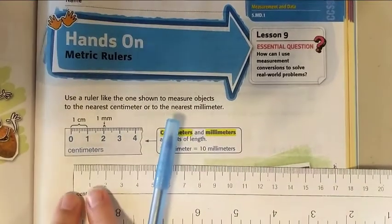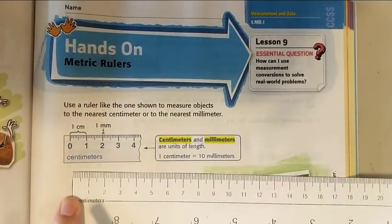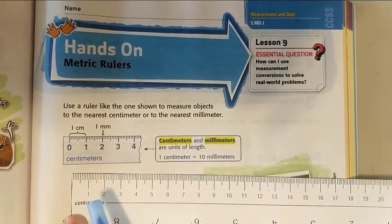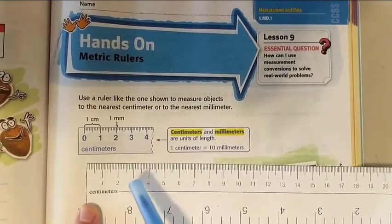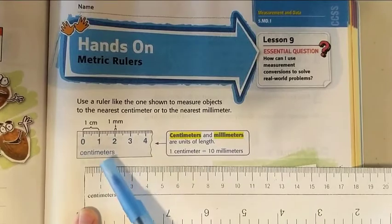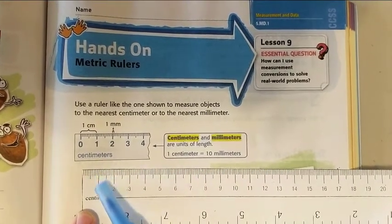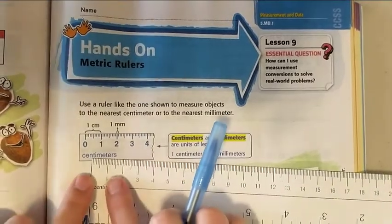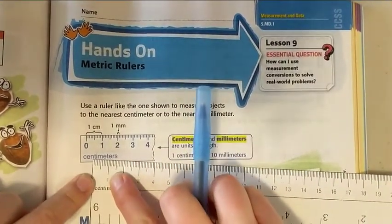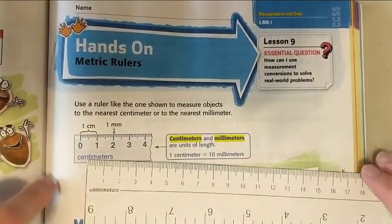One centimeter is the same as 10 millimeters. So if you're working in millimeters, instead of counting one, two, three, four, you're counting 10, 20, 30, 40, and each line is a single unit. If you're working in centimeters, this is one, and then each line is a tenth of a unit, but we'll go over that more.